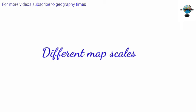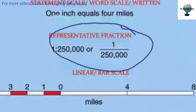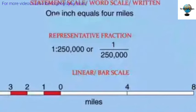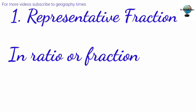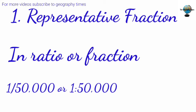Map scales can be expressed in three different ways: the ratio or representative fraction, the statement scale, or the linear scale. The representative fraction is expressed as a ratio or fraction where the numerator is always one while the denominator carries the number. For example, if you are expressing 1:50,000, you can also write it as one over 50,000.